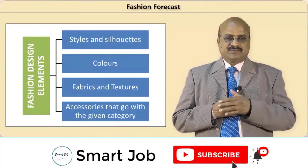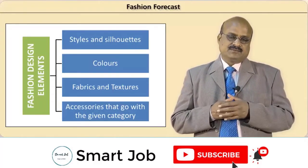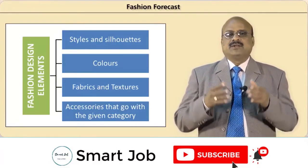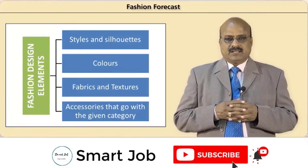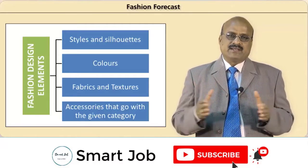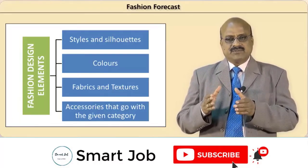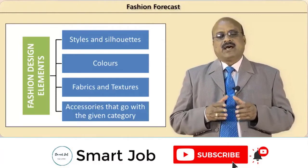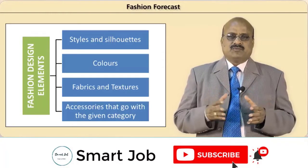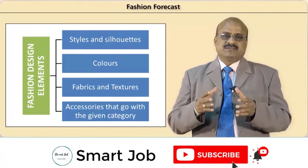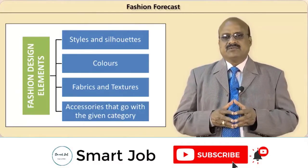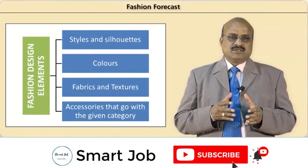Fashion design elements are: styles and silhouettes, colors, fabrics and textures, and accessories that go with the given category. The fashion forecast is made for each product category, such as men's wear, women's wear, etc., and for a particular season and year. For example, fashion forecast for men's wear spring-summer season 2016, or men's wear winter-autumn for 2016.